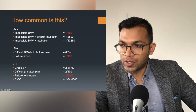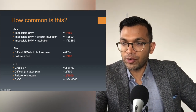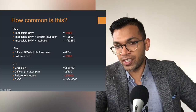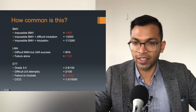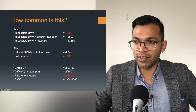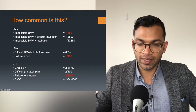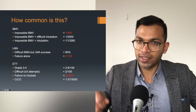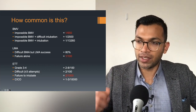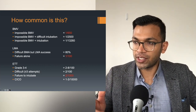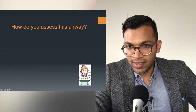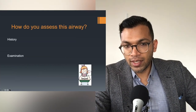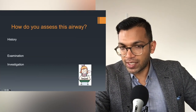CICO often happens not because the patient is inherently difficult, but because people have done the wrong thing — persisting at a failing technique, losing sight of the environment and situational factors, and repeatedly attempting intubation, thereby traumatizing the airway. So how do you assess the airway? History, examination, and investigations.